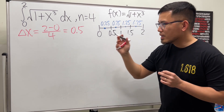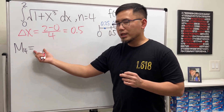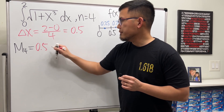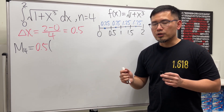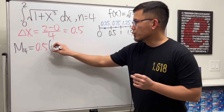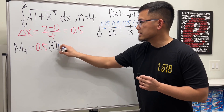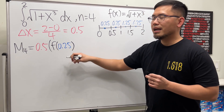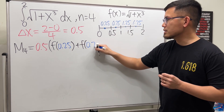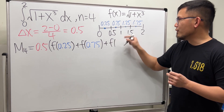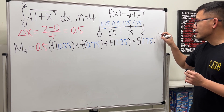Now we are ready to go. Midpoint rule M4: the notation starts with delta x out front, so that's 0.5, then parentheses. For the midpoint rule the coefficient of each function value is just 1. So we have: f(0.25) + f(0.75) + f(1.25) + f(1.75). And that's it — you're done.